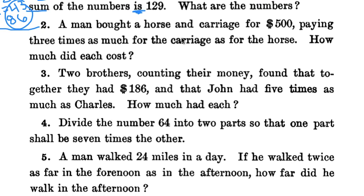Number 2. A man bought a horse and a carriage for $500, paying three times as much for the carriage as for the horse. How much did each cost? Which one do we have the least amount of information about? Three times for the carriage. So we have more information about the carriage, less information about the horse. That becomes the x. Three times x for the carriage. Those two together equal 500 because he bought that total.